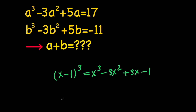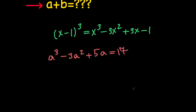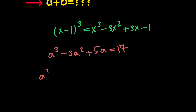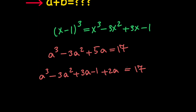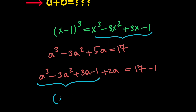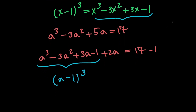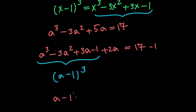Notice that our first equation is a cubed minus 3a squared plus 5a equals 17. Let's go ahead and break down 5a into 3a plus 2a, so we're going to have a cubed minus 3a squared plus 3a plus 2a equals 17. Next, let's subtract 1 from both sides, and then we can compare this with the expansion. They are of the same form, which means we can write this as a minus 1 all cubed. So we have a minus 1 all cubed plus 2a equals 16.